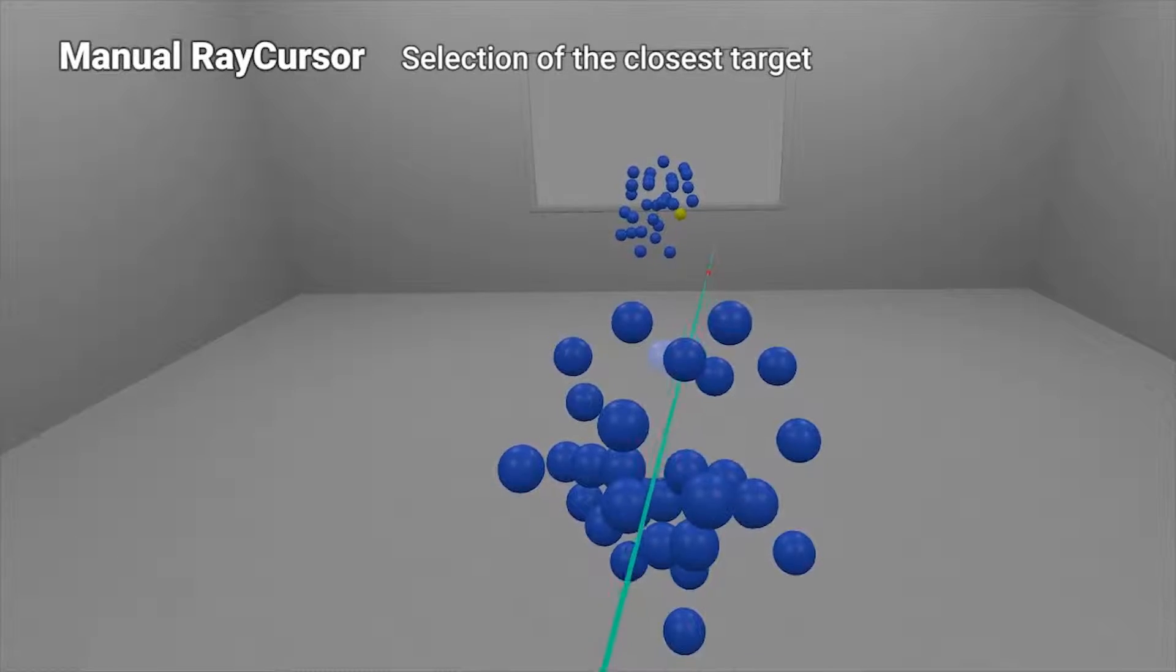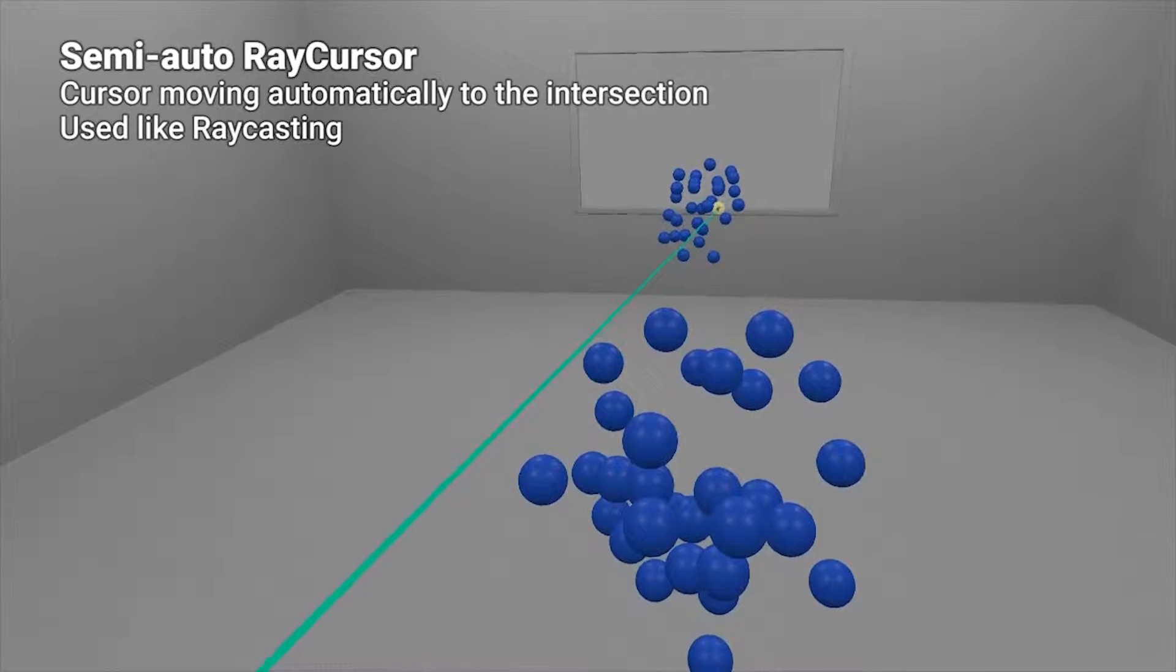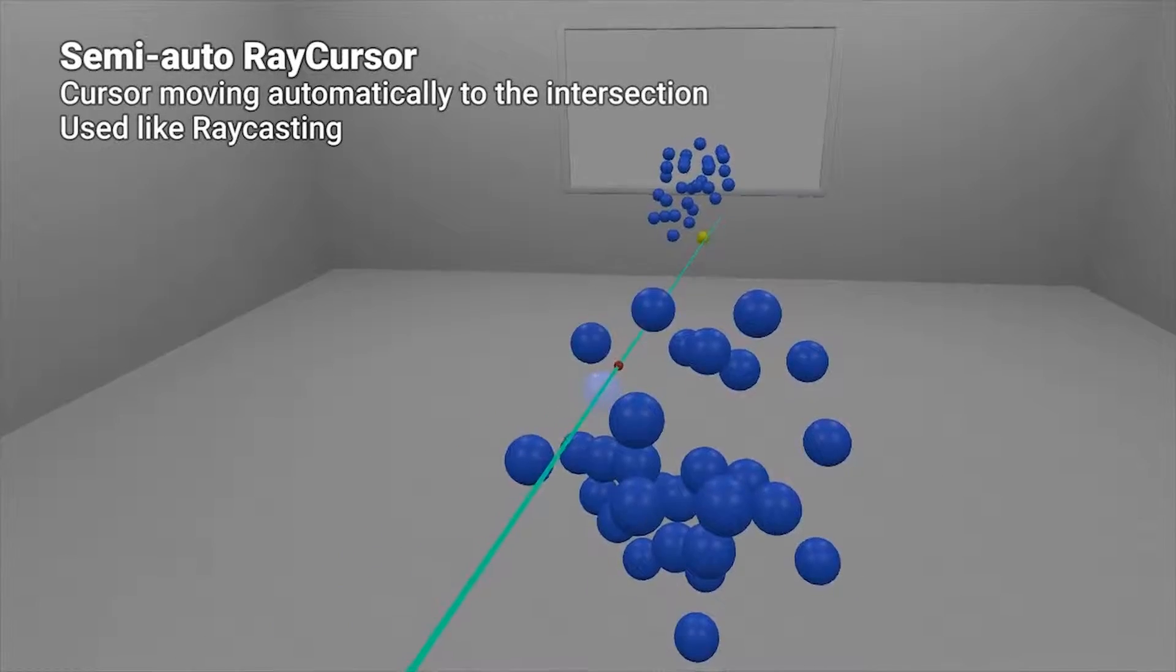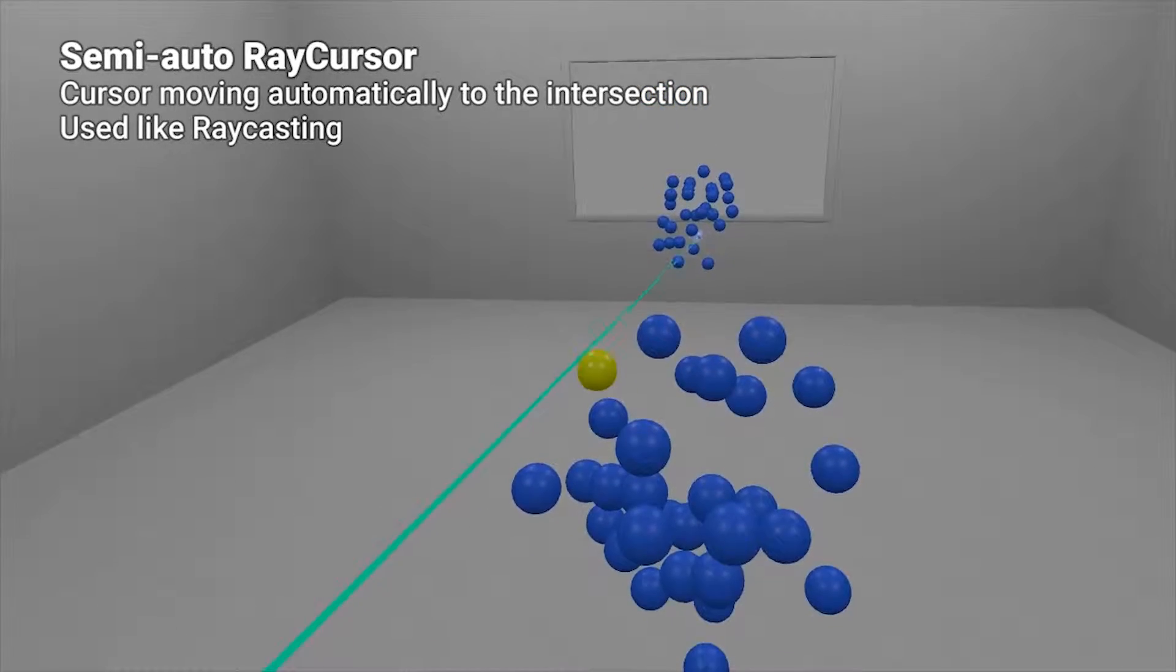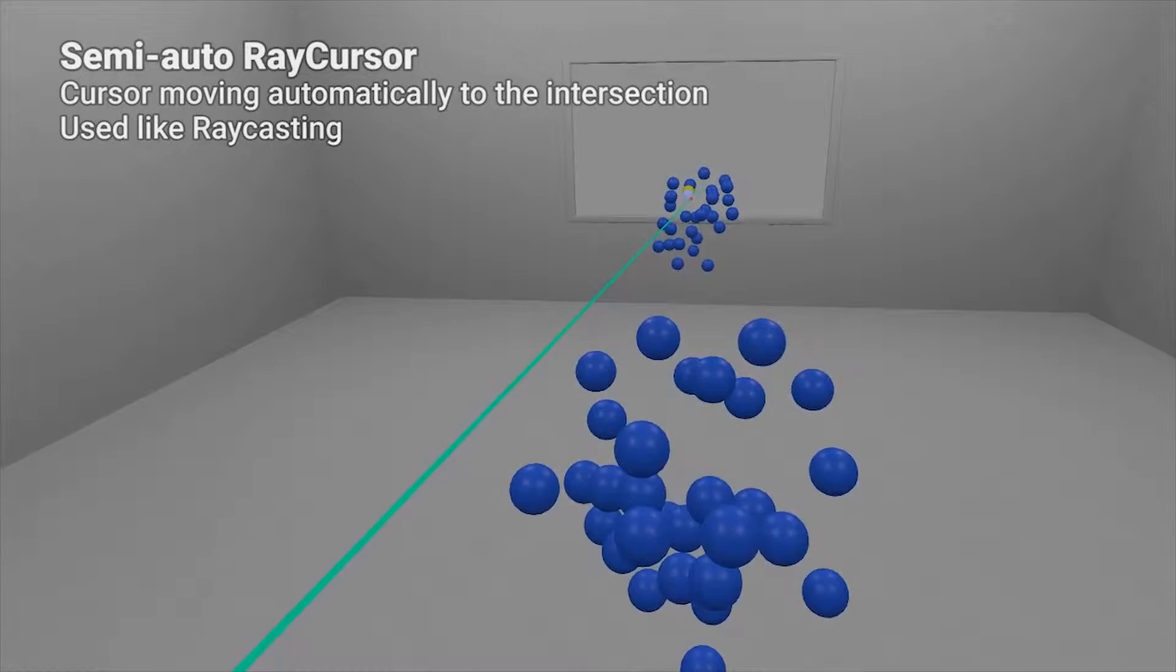We also developed a semi-automatic version of RayCursor. When the technique is in automatic mode, the cursor moves automatically to the intersection between the ray and the target. The user can use it the same way as raycasting.